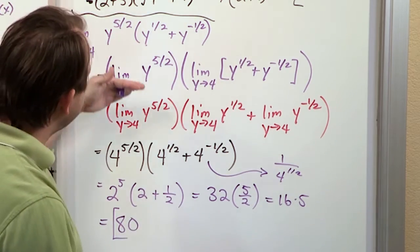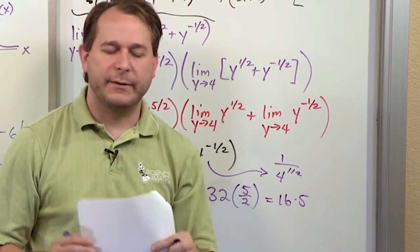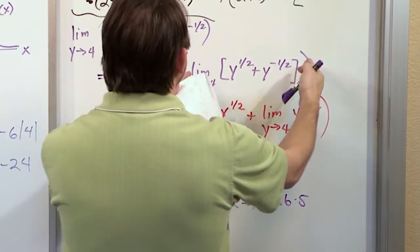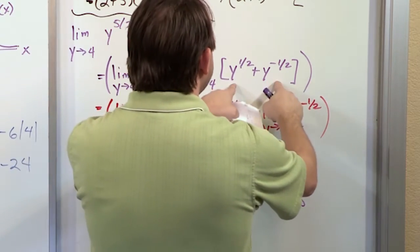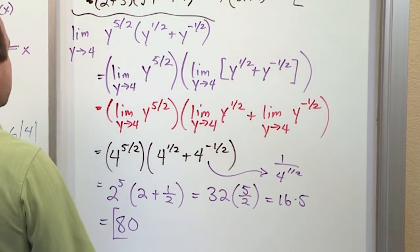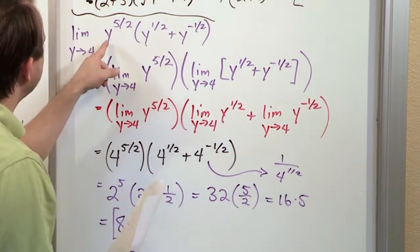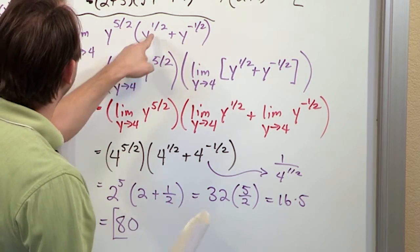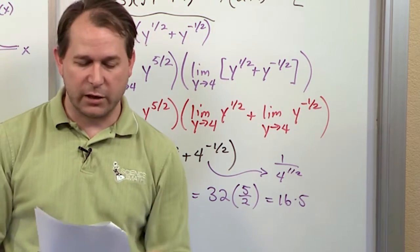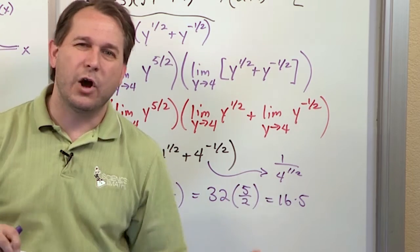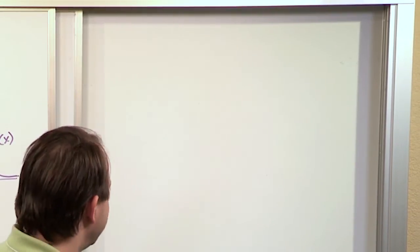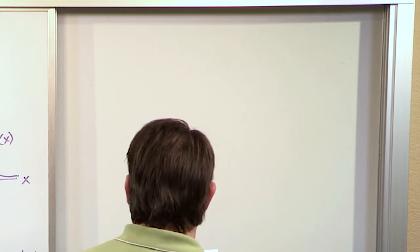So it looks very messy the way I've written it, but just keep in mind I'm only doing this to show you the limit laws and how to apply them. I see two functions multiplied, so I write two limits multiplied. I see a sum of two functions, so I write them as the sum of two limits. Then I go and solve everything. But really, if you just realize this looks like a well-behaved function and plug it in everywhere, it's exactly the same thing.